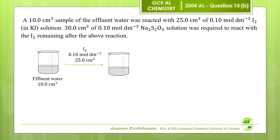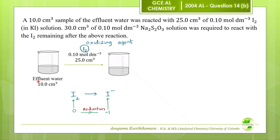Now we will try to understand the chemical reactions taking place when iodine reacted with the effluent water. Iodine is an oxidising agent. Therefore, during this reaction iodine molecules reduce to iodide ions. This effluent water contains sulphite and sulphate ions. The oxidation state of sulphur in the sulphite ion is plus 4, and the oxidation state of sulphur in the sulphate ion is plus 6.